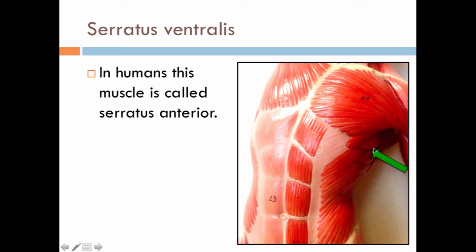In humans, the serratus ventralis is called the serratus anterior, seen here — this would be the left serratus anterior. In cats it's called the serratus ventralis. If you think about this, the directional term makes sense: on the cat it is the ventral side, and in humans it is also the anterior view of the chest.